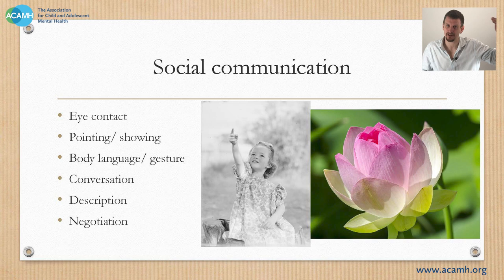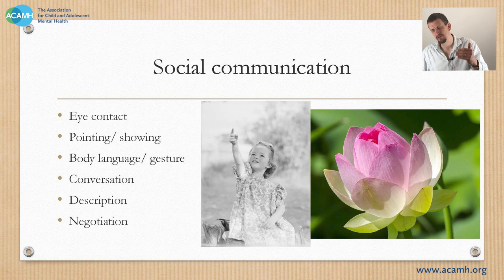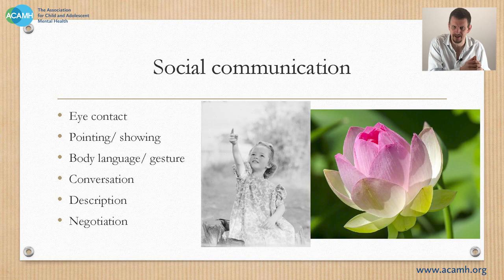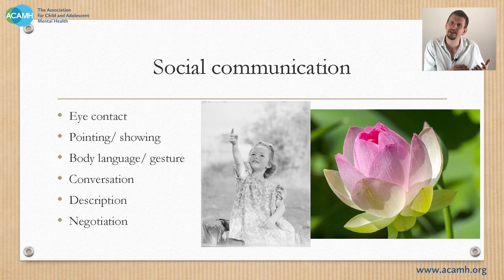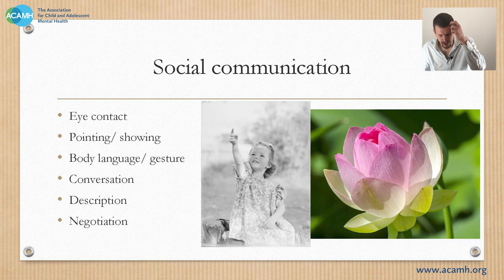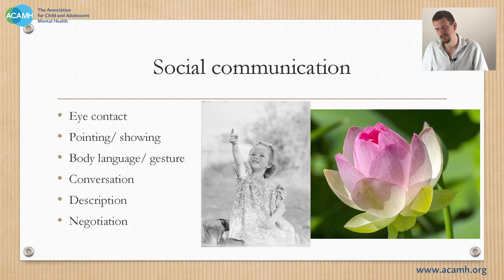Another way people with poor social communication struggle, particularly older children, is with describing things. People with poor social communication can't understand what you don't know — they can't give you the context you need. A useful clinical approach is asking them to explain the video games they play: they often give random details without telling you how you win or what it looks like. They can't see the wood for the trees, and in less trivial terms that becomes a big problem — when they're trying to describe why they got in trouble, they come up with random nonsense and people get cross or don't understand they're just struggling. Similarly, negotiation becomes very important over time, and understanding other people's intentions and motivations is very difficult if you have a social communication deficit.